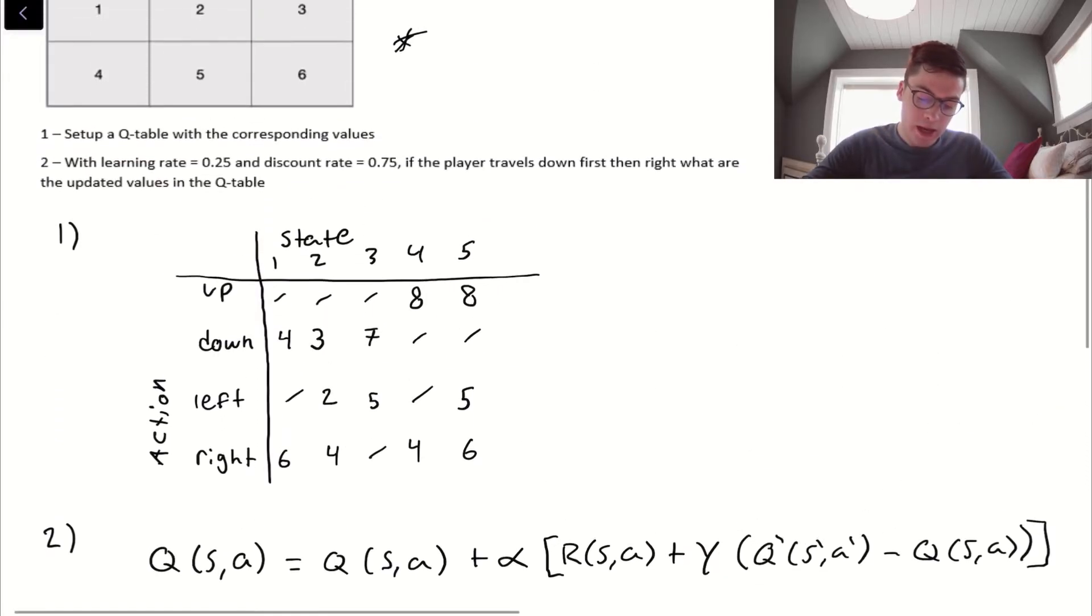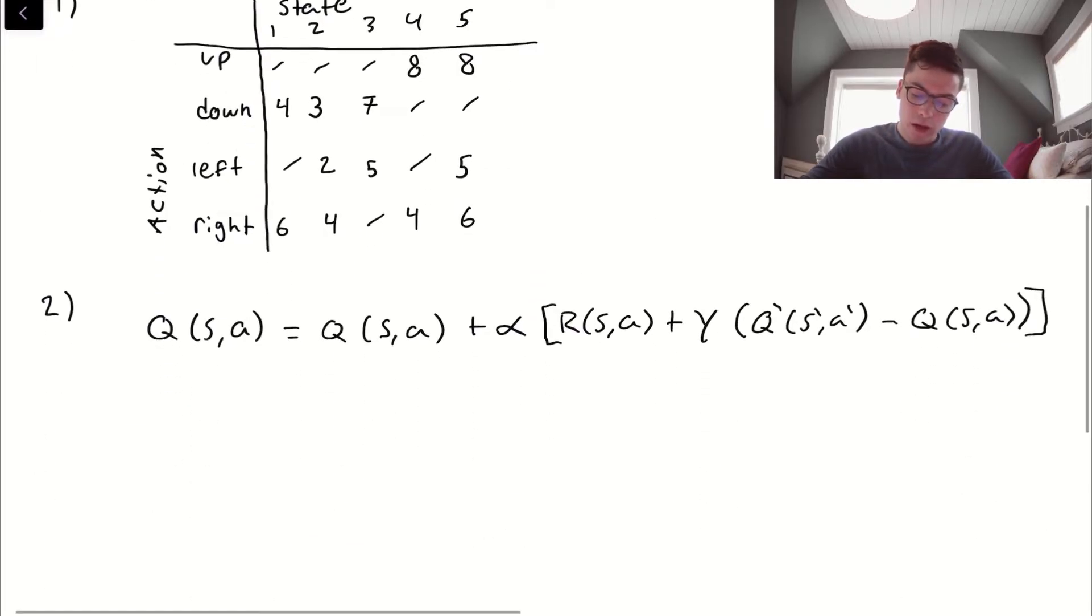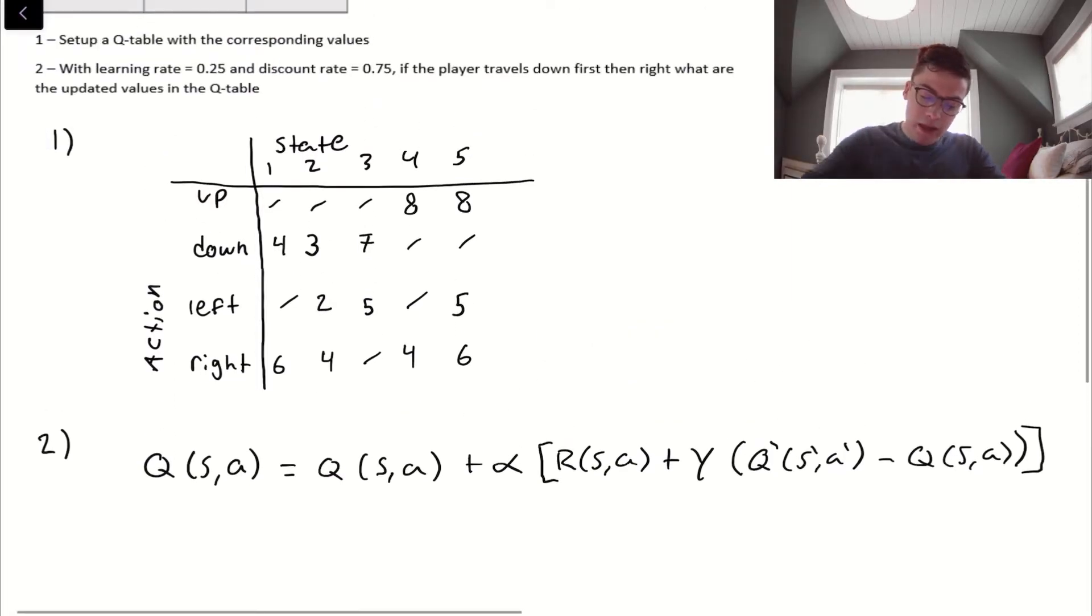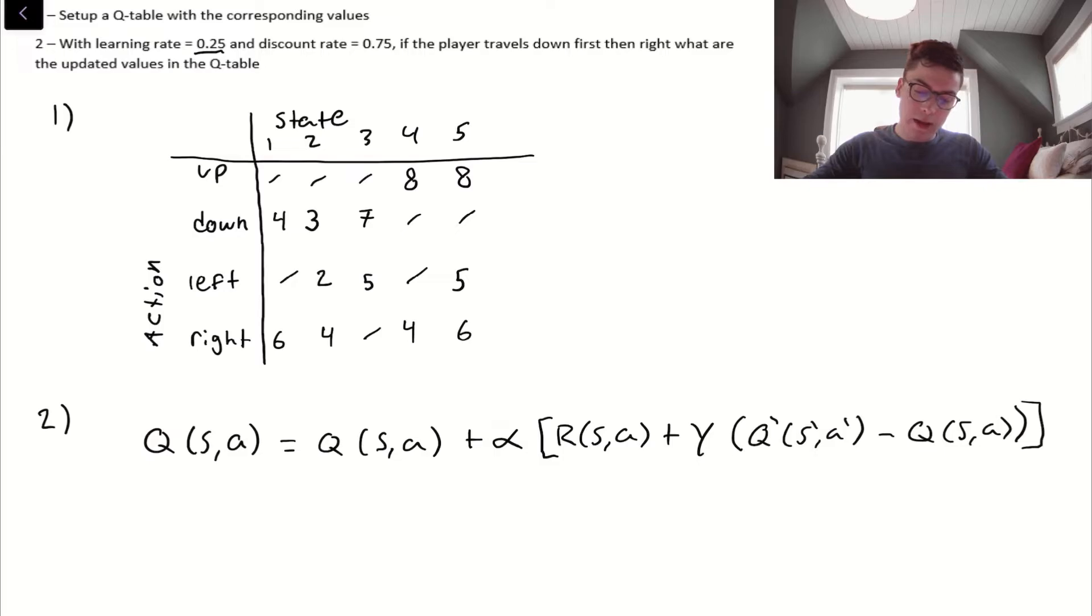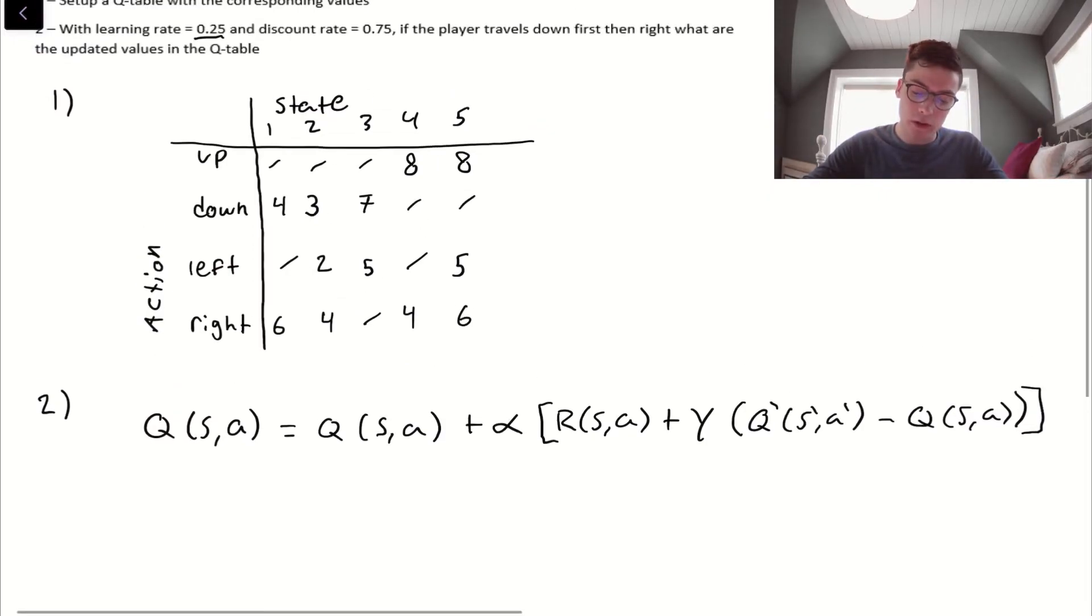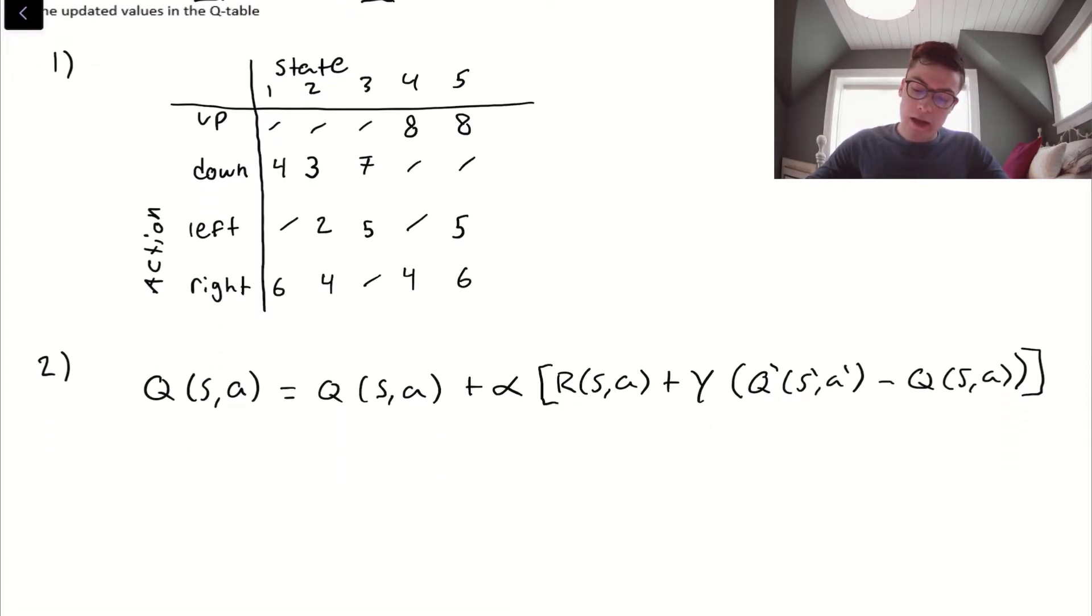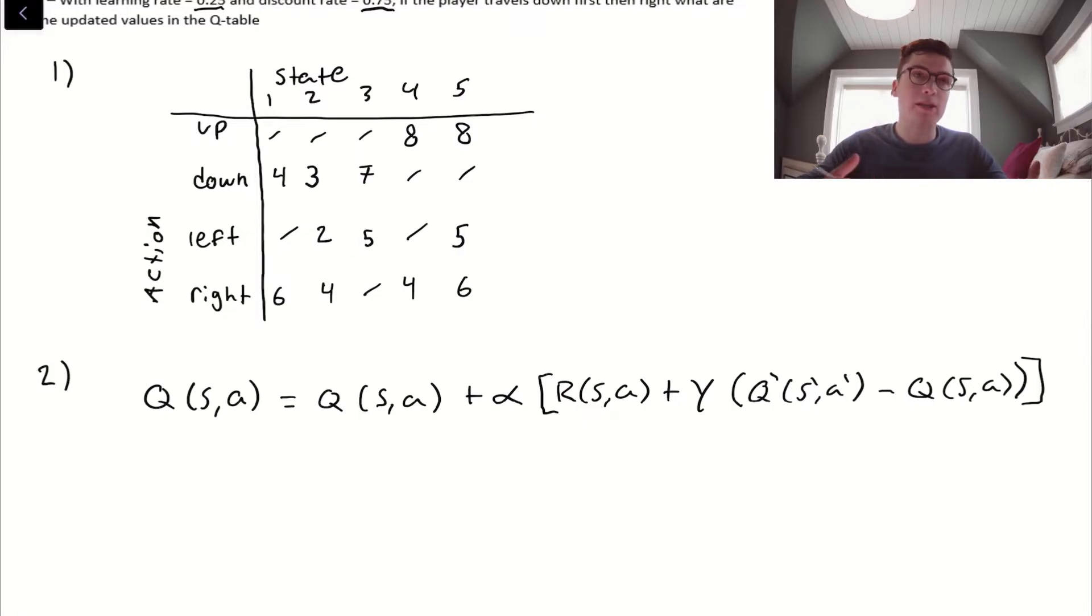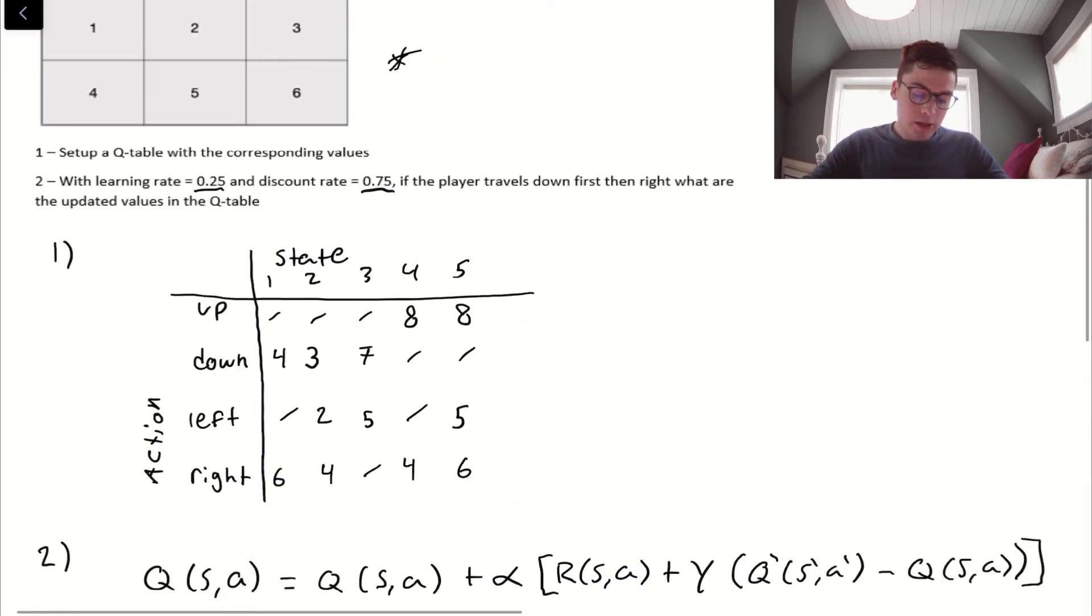Q(S,A) is basically the Q value that they give us for the corresponding move. Alpha is the learning rate, which is provided to us here. R(S,A) is the reward that's given once we reach a certain state. Gamma is the discount rate, which is shown here. Q prime represents the maximum value for the next state that we will be in.